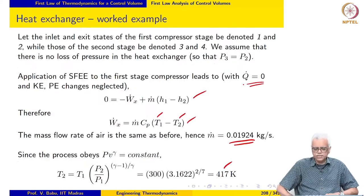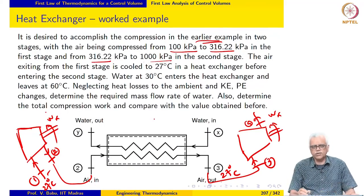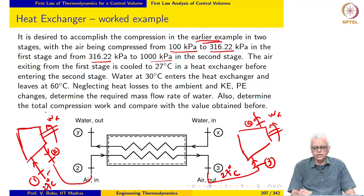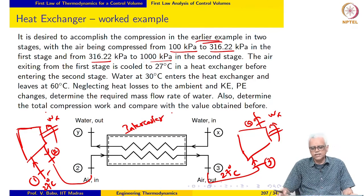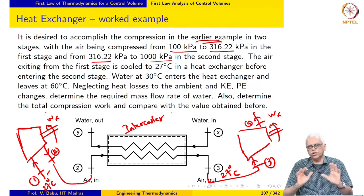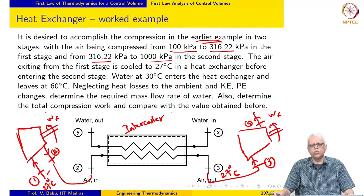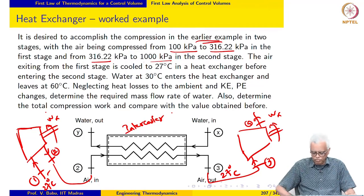Such a device is usually called an intercooler, to denote the fact that cooling is employed in between stages of compression. Normally there is a two-stage compressor and we use intercooling in between the stages to reduce the compression work. This is why in many practical applications, this strategy is almost always employed.